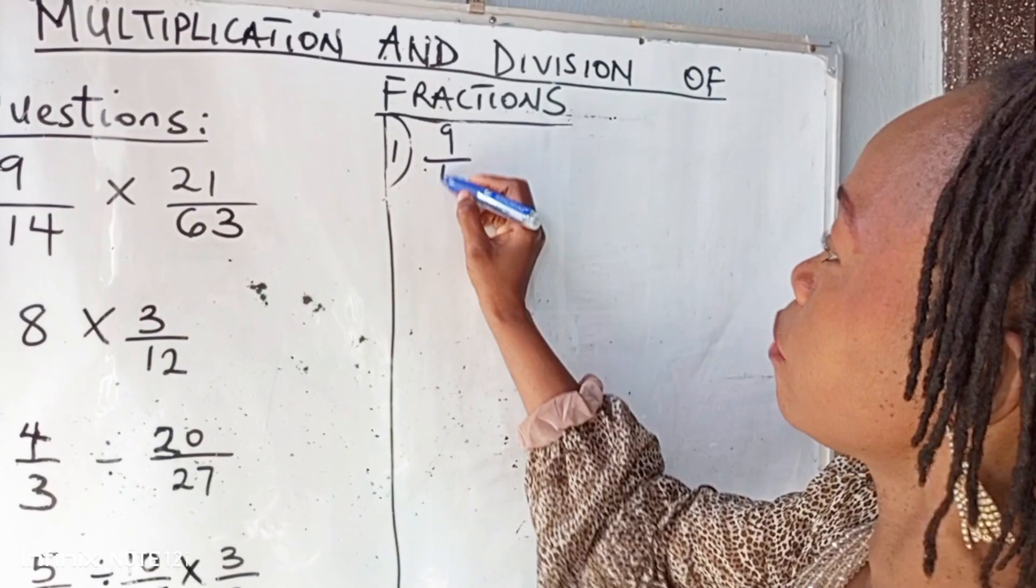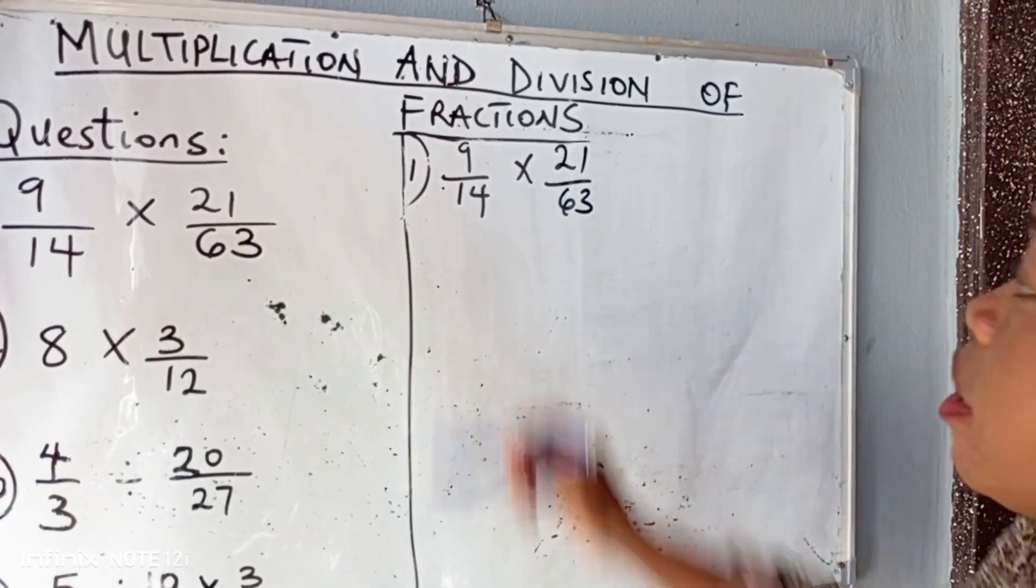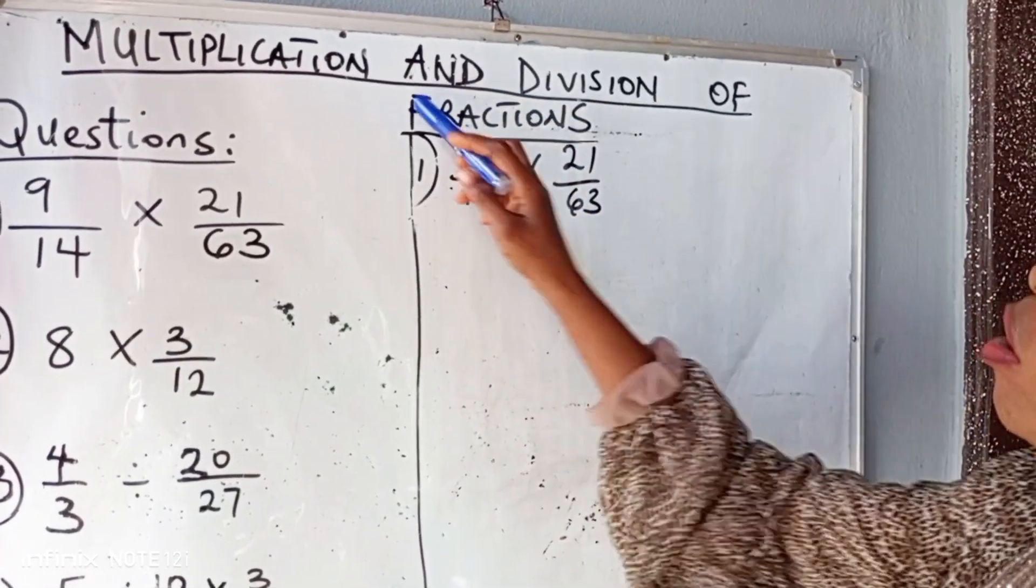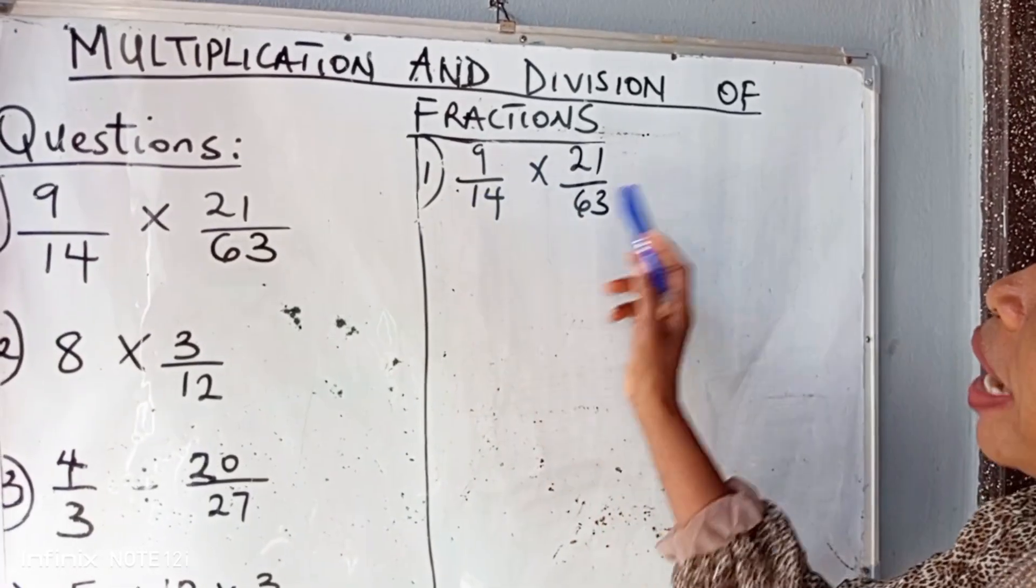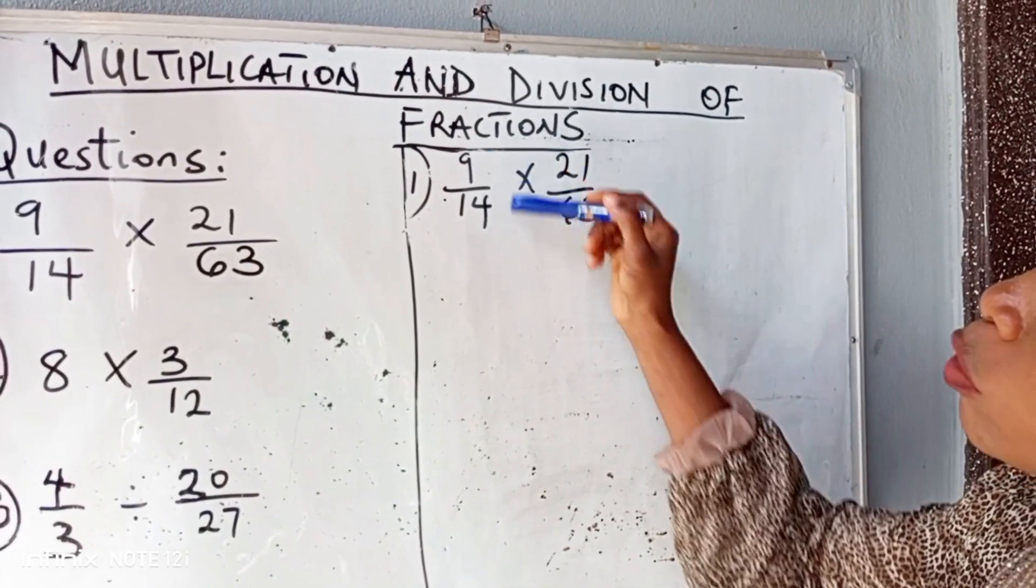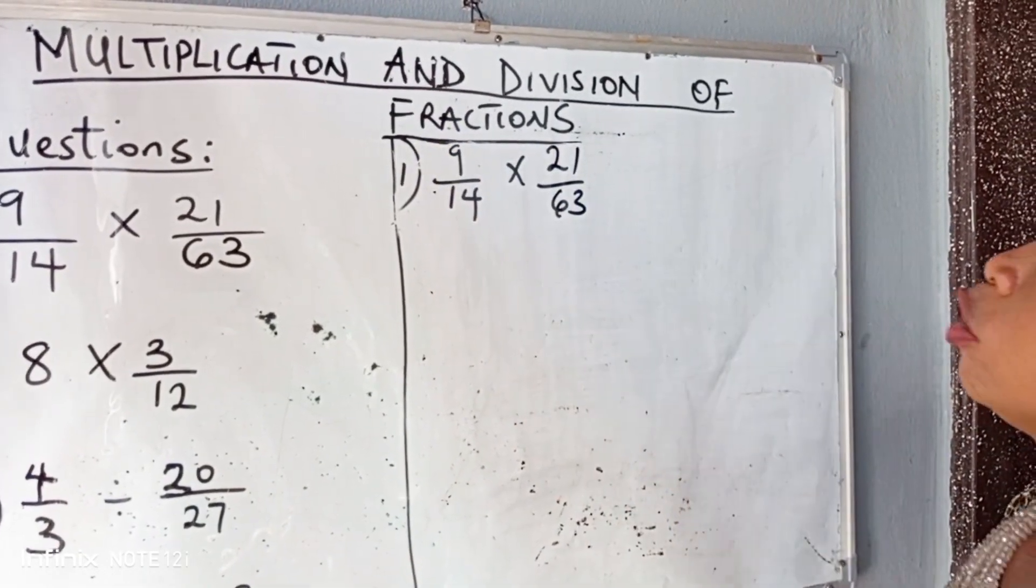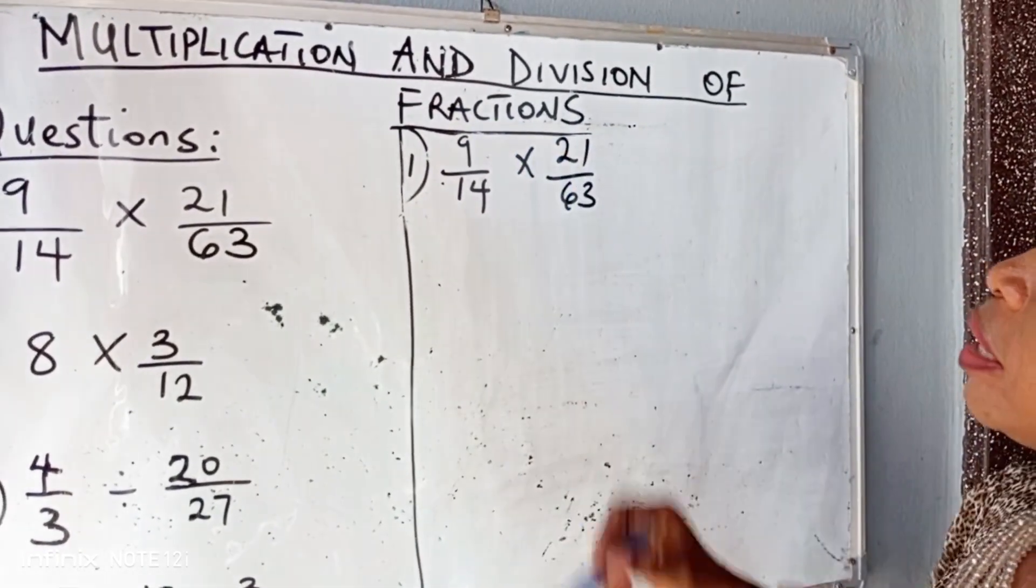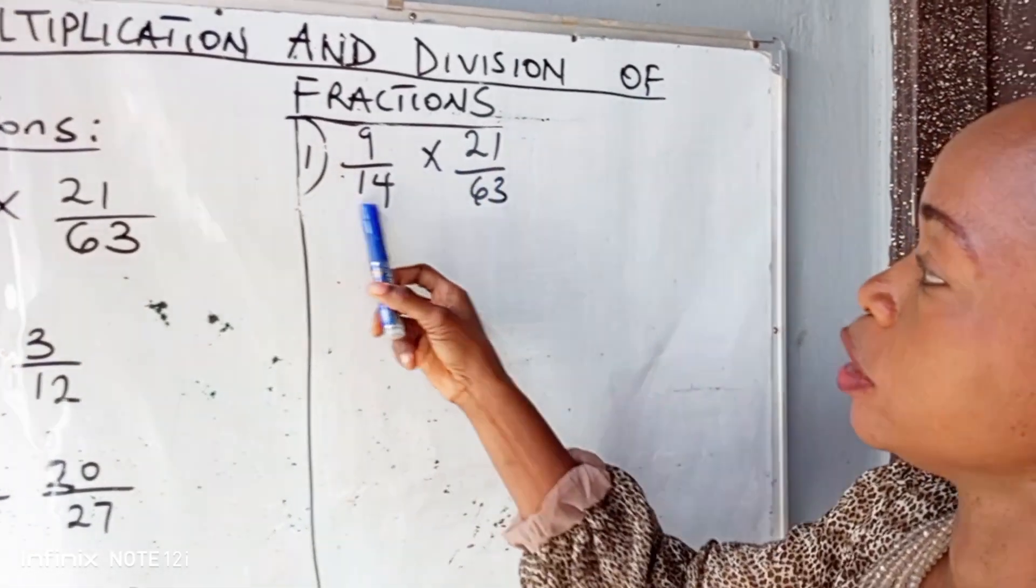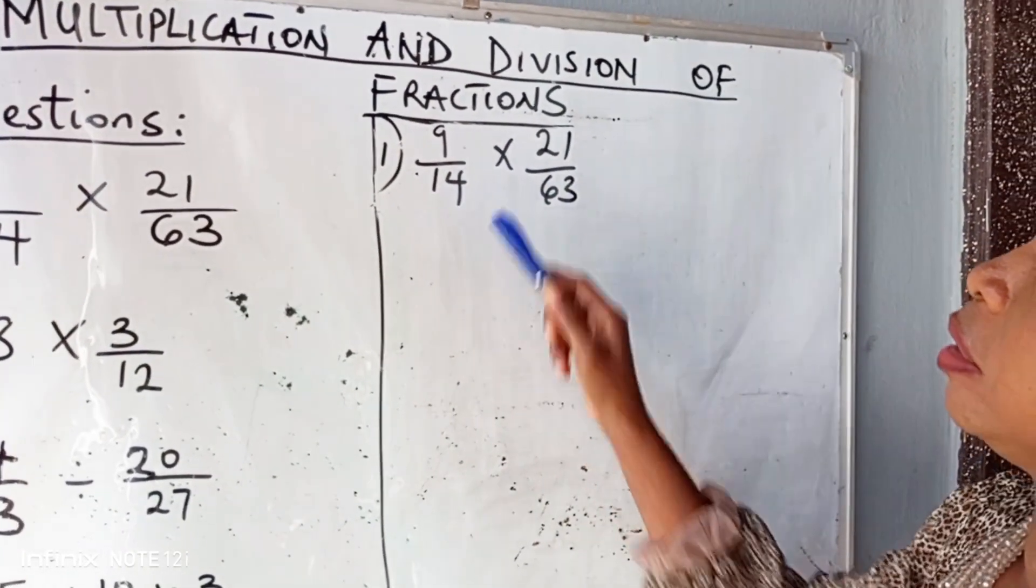The first question says 9 over 14 multiplied by 21 over 63. We divide vertically or diagonally. Please, we don't divide horizontally. That means a denominator and denominator. You check for a number that can go successfully, or you divide diagonally like this, 21 and 14, or 9 and 63. So let's check. 9 and 14, is there any number that can divide them successfully? 2 cannot go because 2 can divide an even number but cannot divide 9, which is an odd number. 3 cannot go into 14. So we leave that.